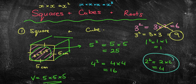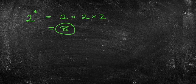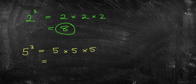Can you find the answer to 2 cubed? Well, 2 cubed is 2 times 2 times 2. 2 times 2 is 4, and 4 times 2 is 8. Therefore 2 cubed equals 8. What about a harder one — 5 cubed? You might need a calculator for this one. 5 times 5 times 5: 5 times 5 is 25, and 25 times 5 is 125.